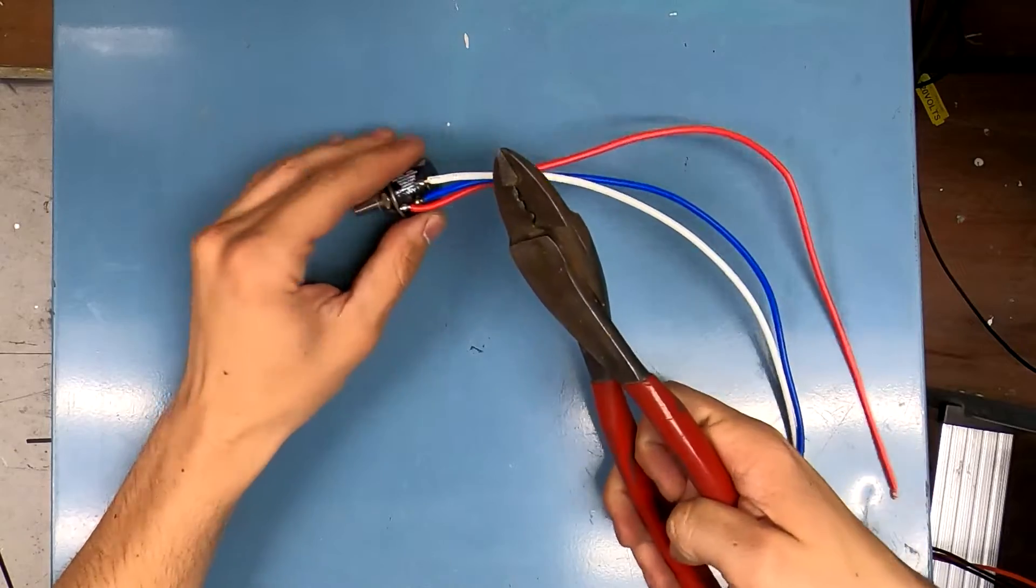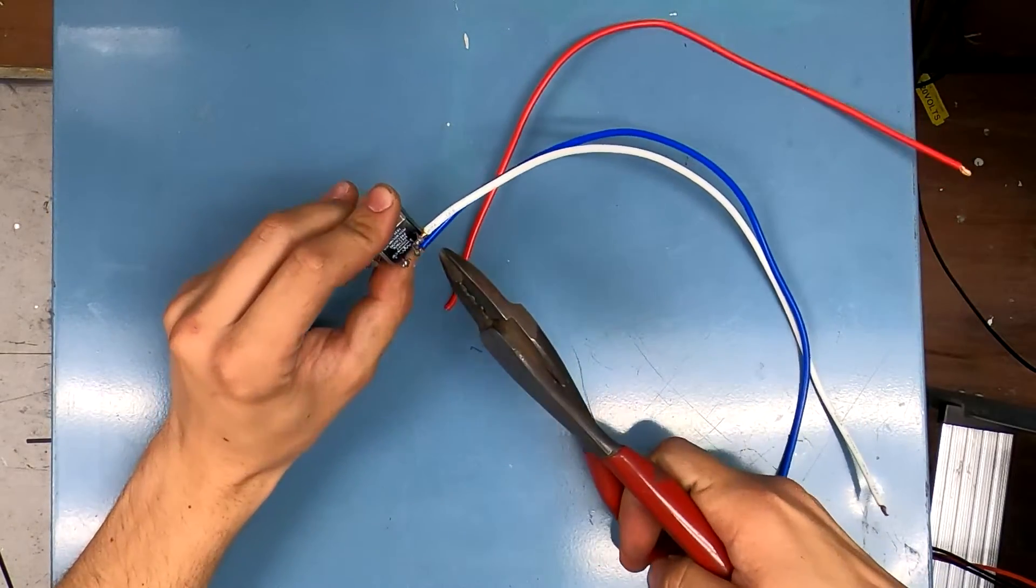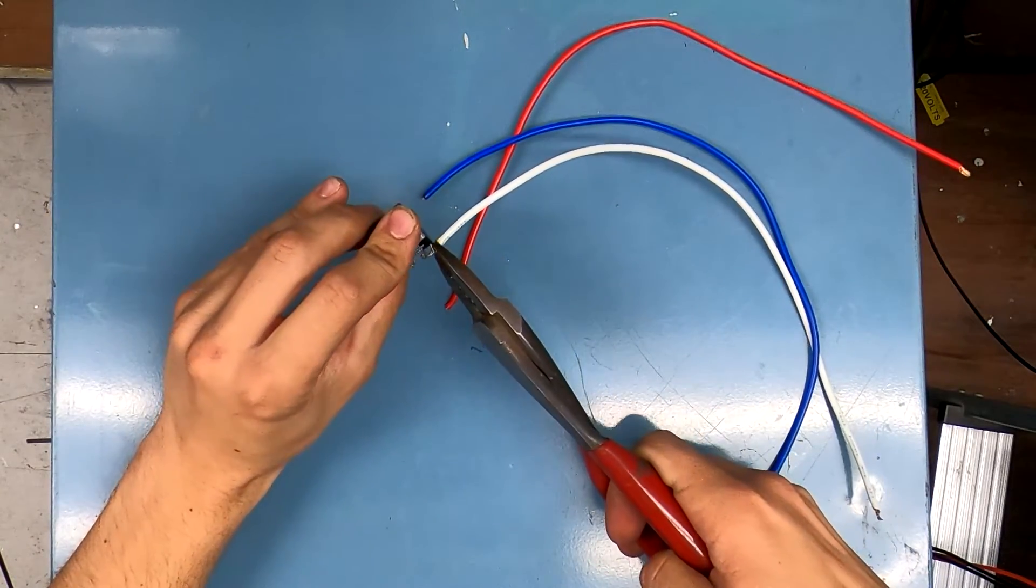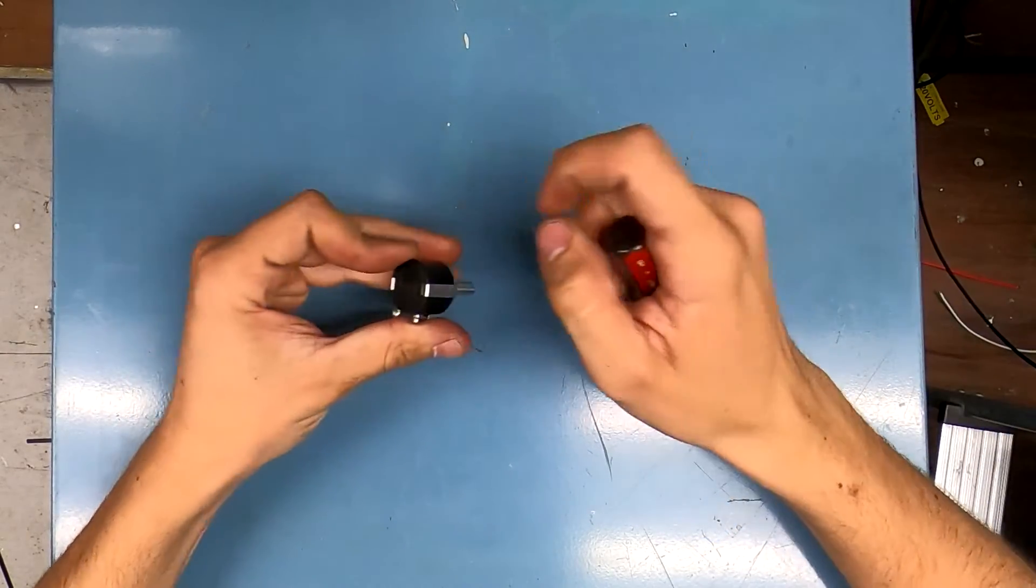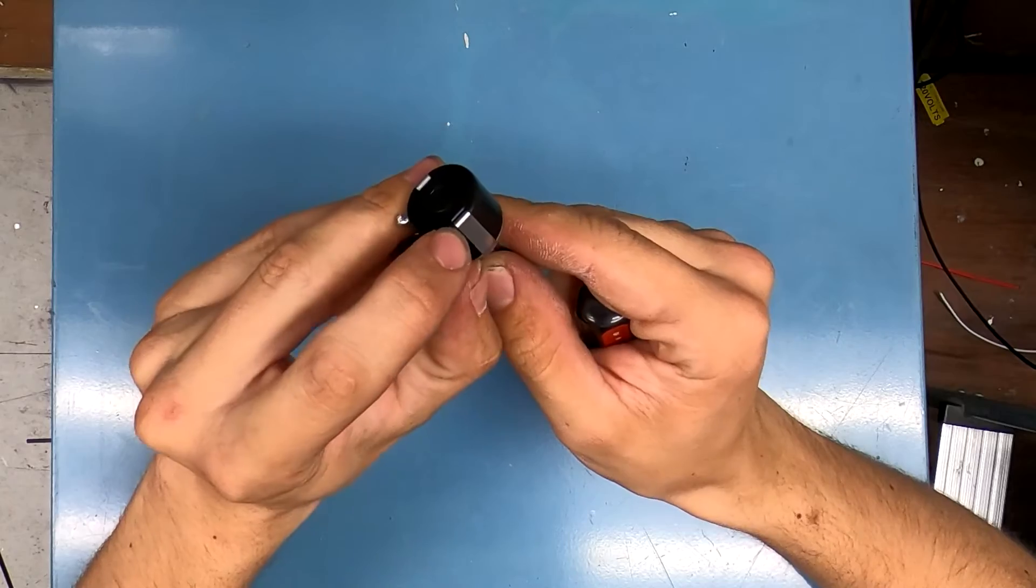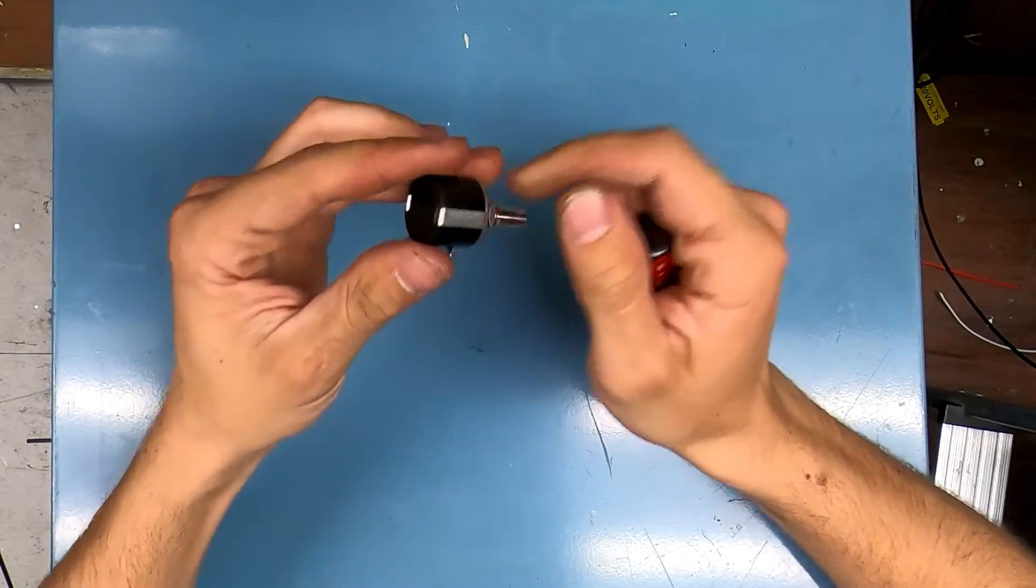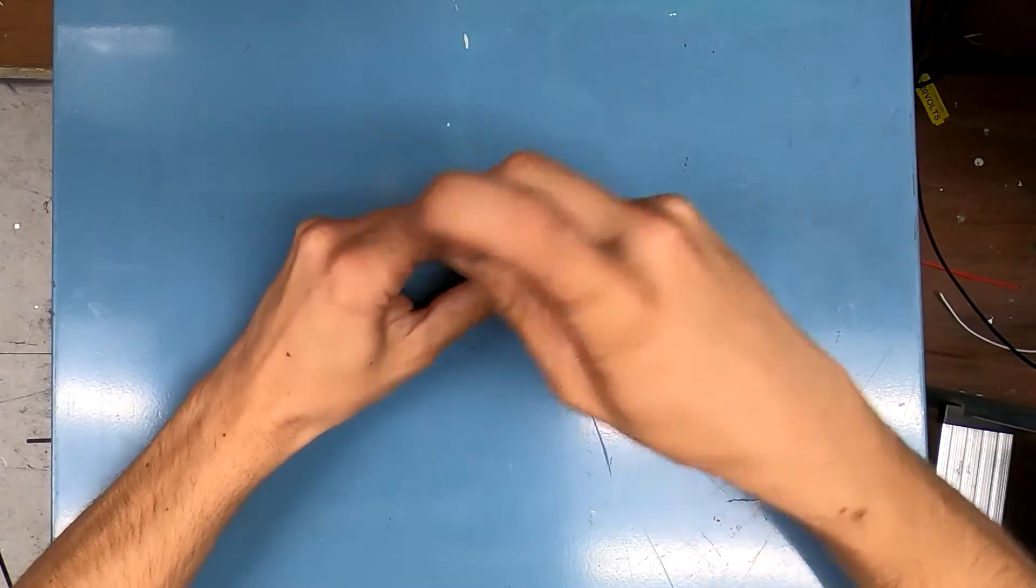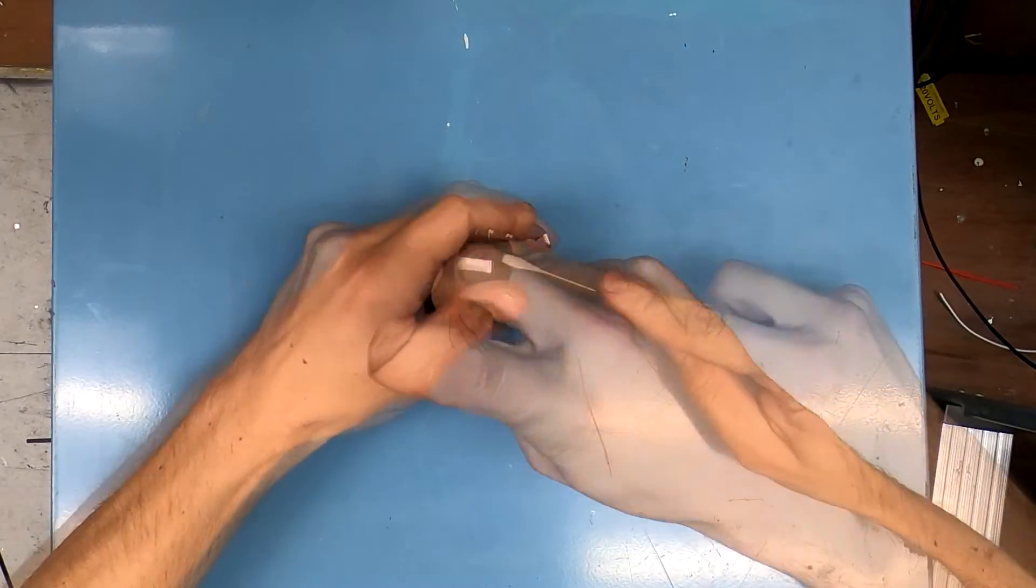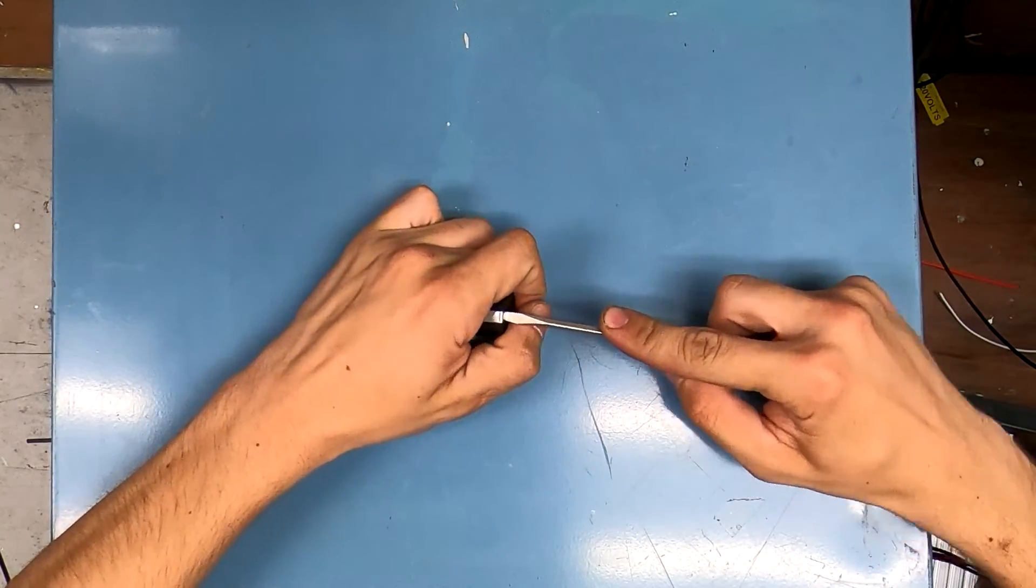To get this guy open, first thing I'm going to do is get these leads out of our way. I'll go ahead and clip those off. Then I'm going to take a screwdriver and carefully, as you can see, there's a little piece of metal in here holding it on. I'm going to jam that screwdriver in there and try and pop that off without stabbing myself in the hand.